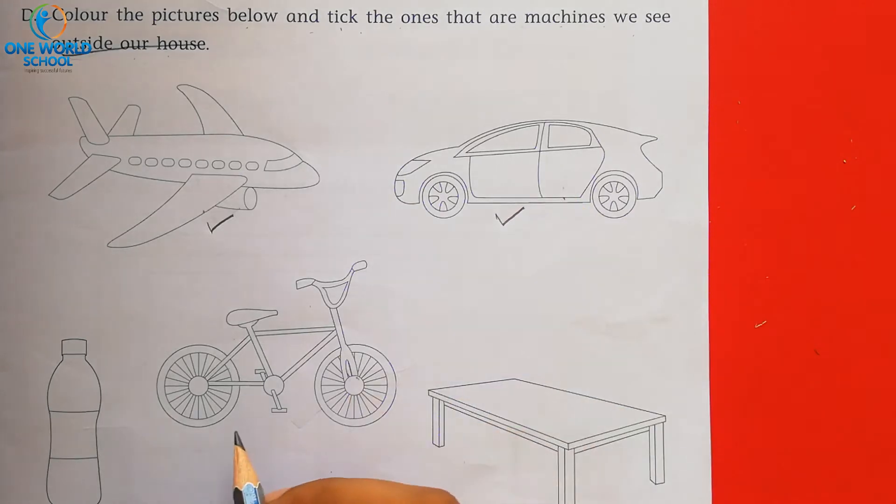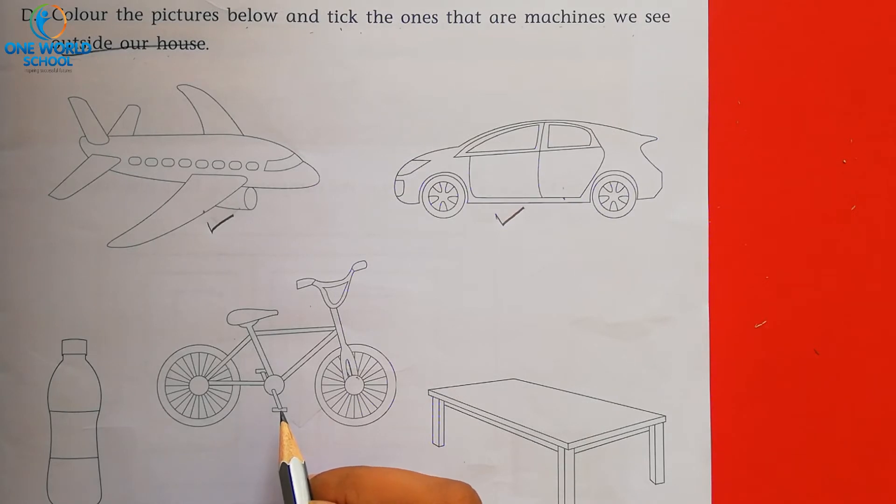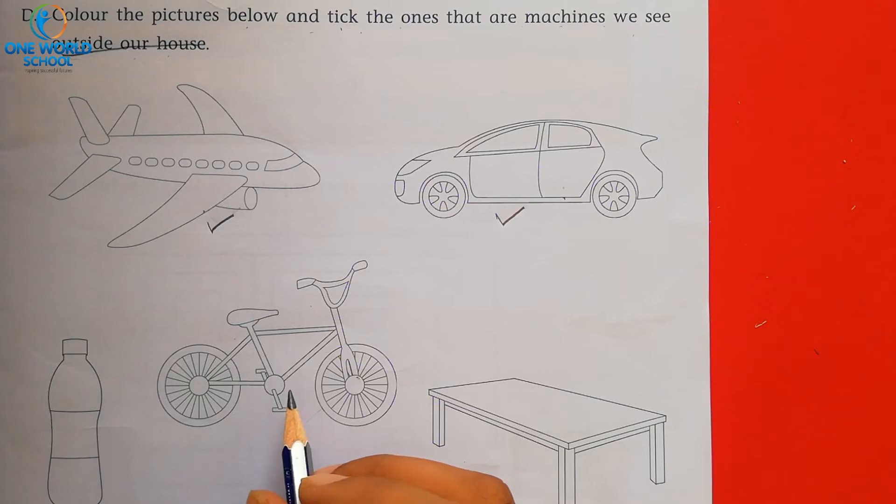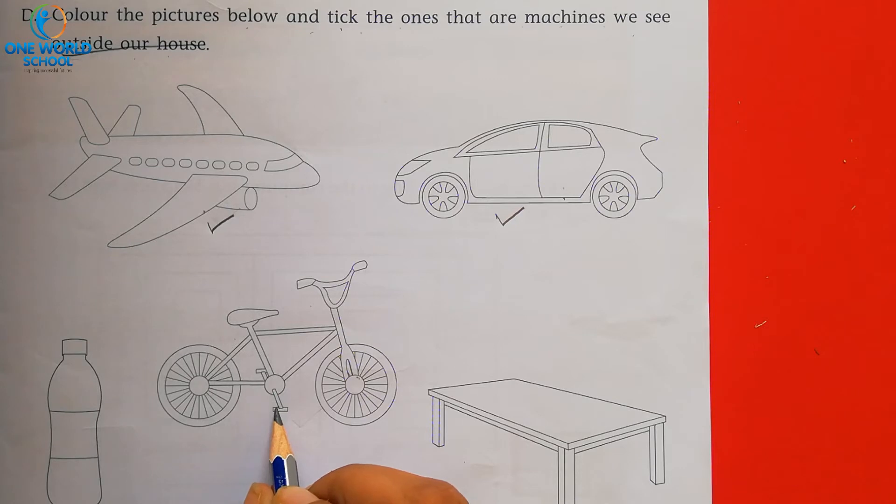Now, number third, bicycle. What are you doing? What do you do? Yes, bicycle will be seen at home. There will be a lot of small children. There will be a lot of big brother or big sister. So, bicycle will you color or not? Yes, bicycle is a machine. So, we have to color it and tick it.